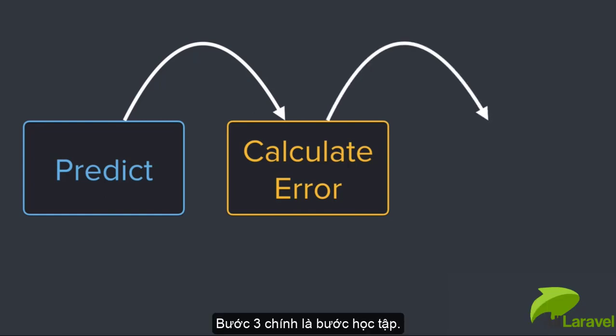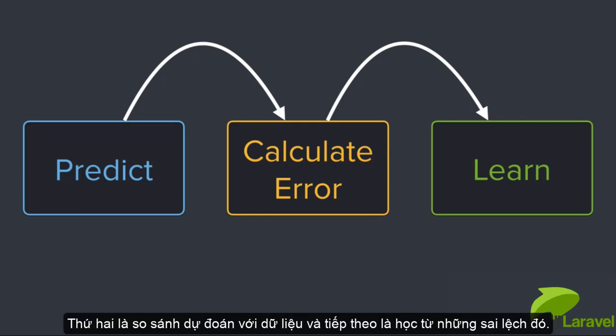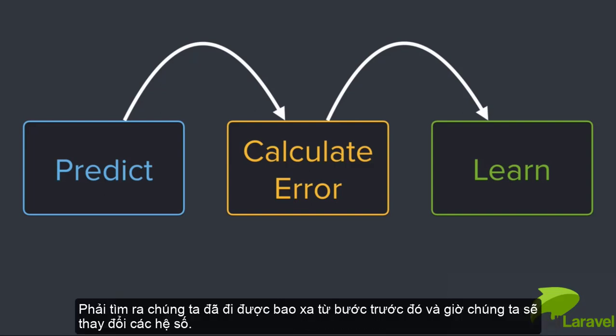And step three is the learning step. This is where we adjust our initial prediction. And this is the crucial part, right? First, we made a prediction. Second, we compared our prediction to the data. And now it's time to learn from our mistakes. Having figured out how far off we were in the previous step, we can now make a change to the coefficients.